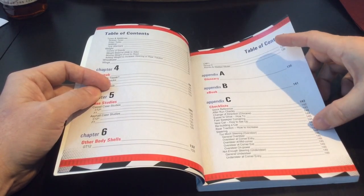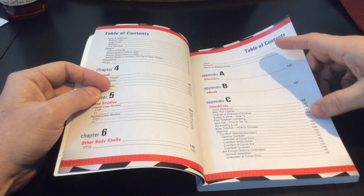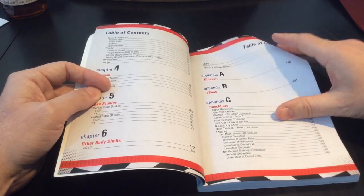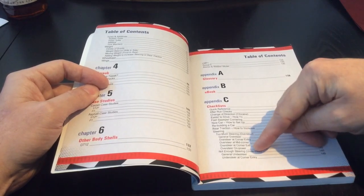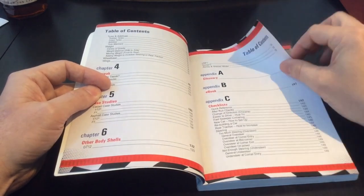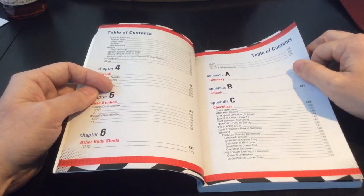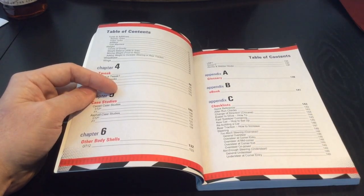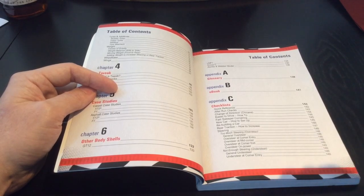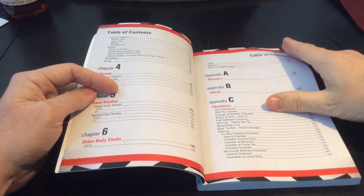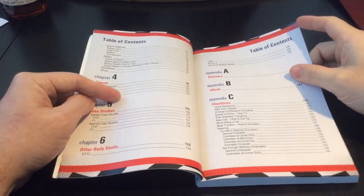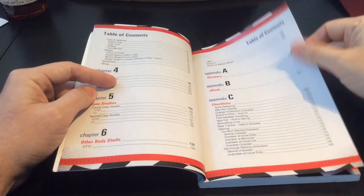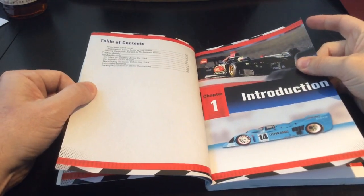Appendix C, you have checklists which are great to have that can really help hone and figure out what exactly is going on with your car's setup. For example, steering: it says general oversteer, oversteer at corner entry. General oversteer just means what does oversteer mean, and general understeer, what does that mean. It goes into detail of at what point in the corner does the oversteer or understeer occur, and that's very important to understand. When you're out on the track, it will also give you a better understanding of how your car is performing.